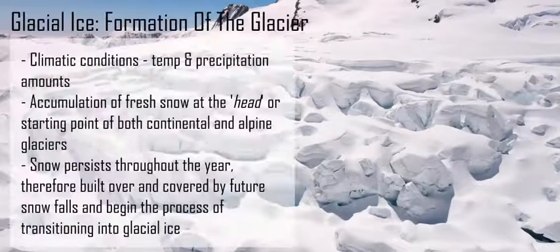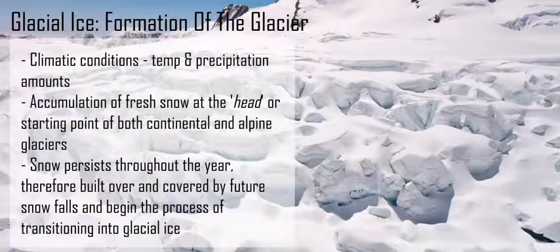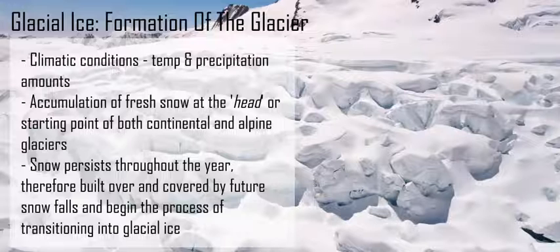A glacier is an accumulation of ice and sediment over a long period of time that is going to flow by gravity downhill. The important part is the formation towards the head, or the beginning — the accumulation stage of this glacier — and it all starts with the precipitation of snow.